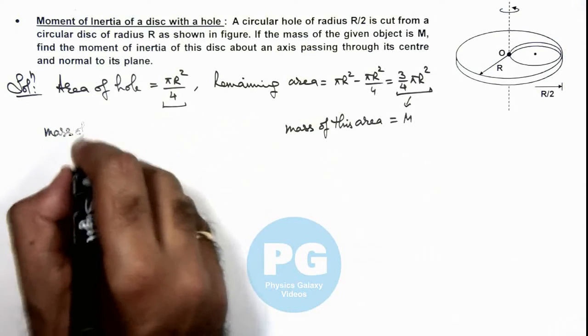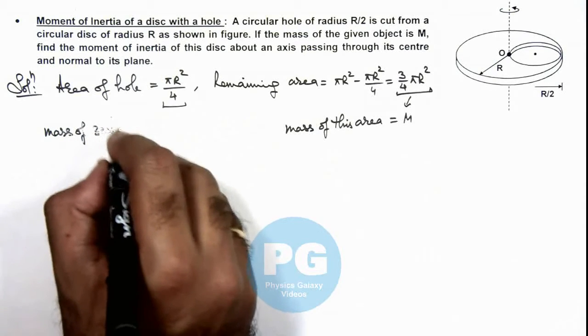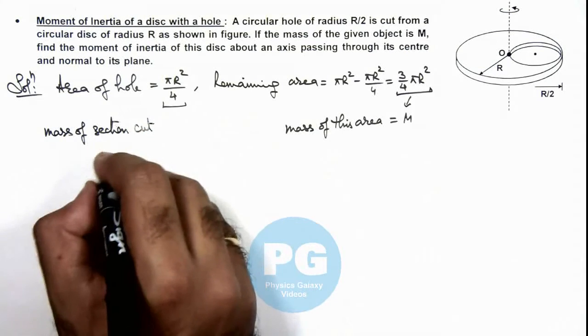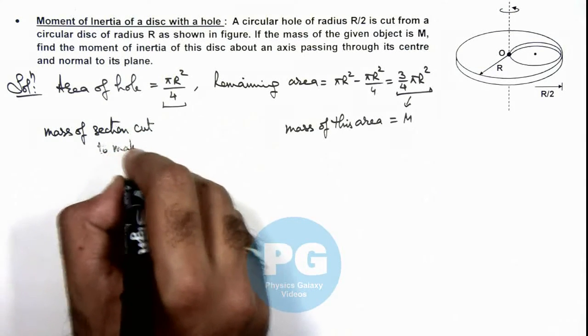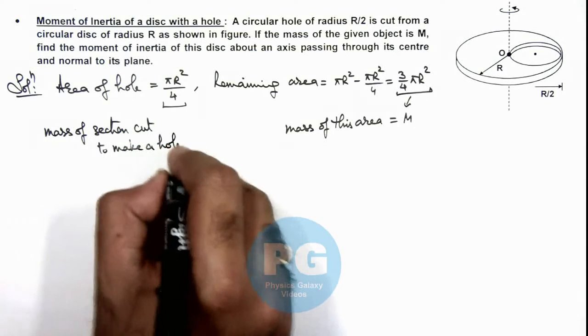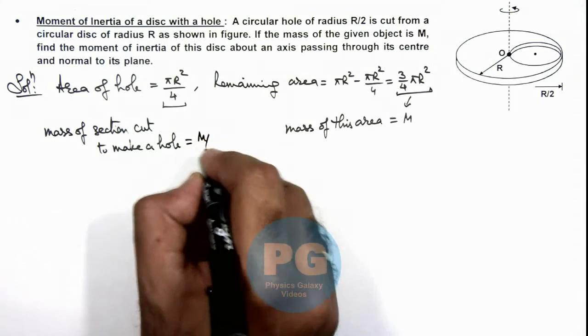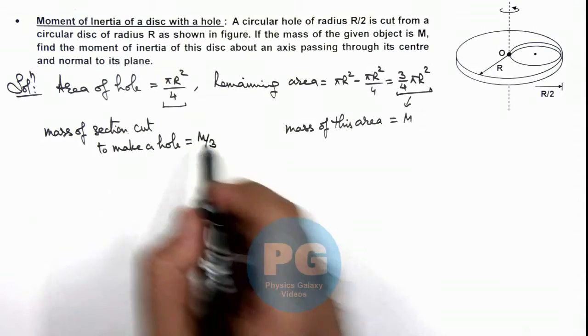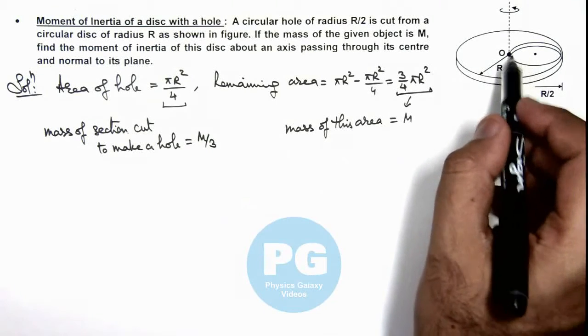Mass of section cut to make a hole can be given as M/3 in this case. So we can say we place this mass back again over here to make the complete disc.